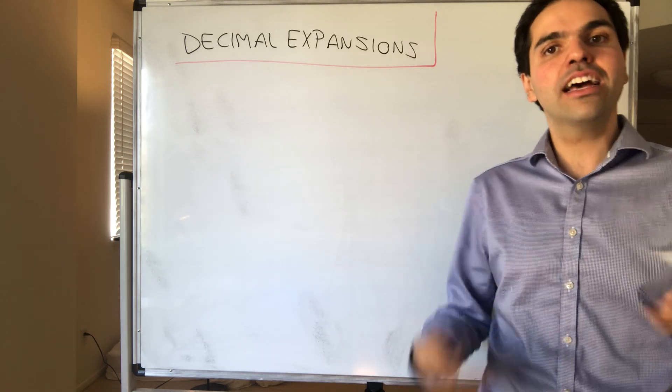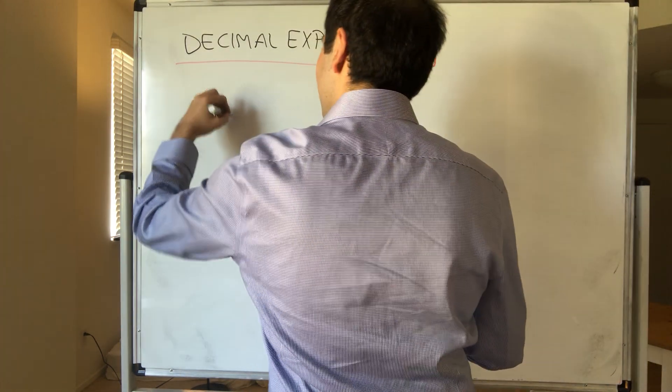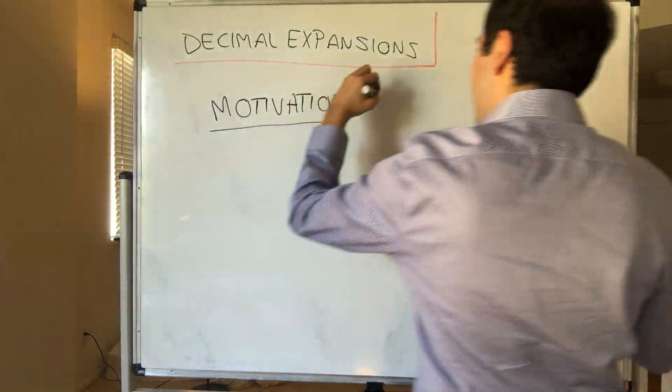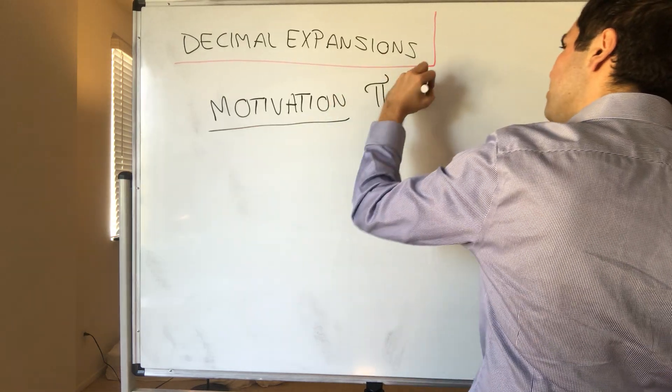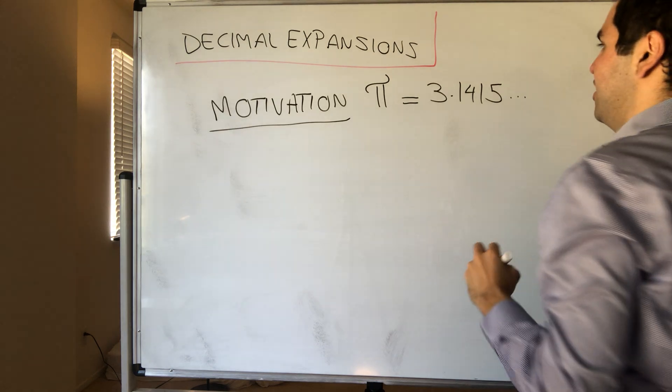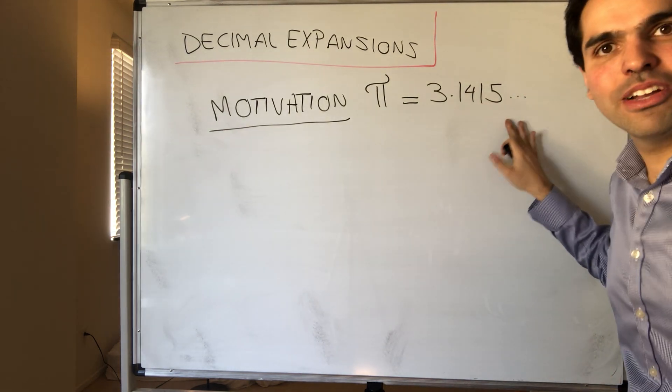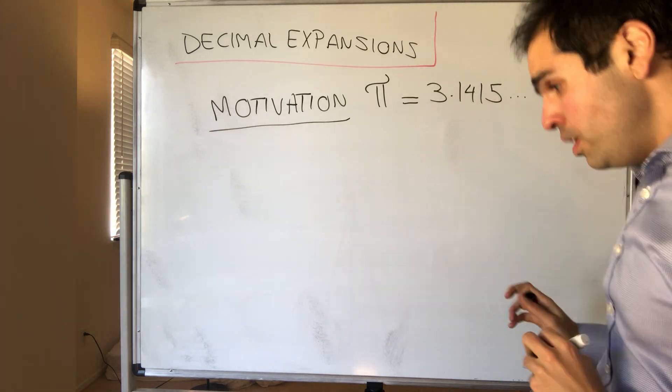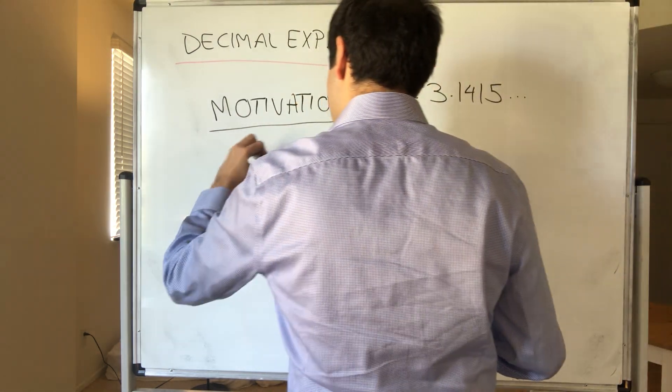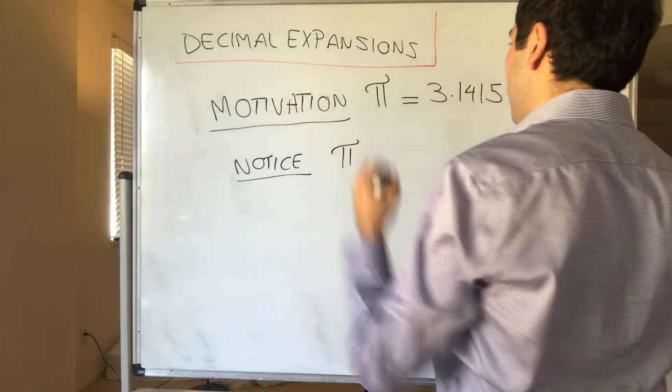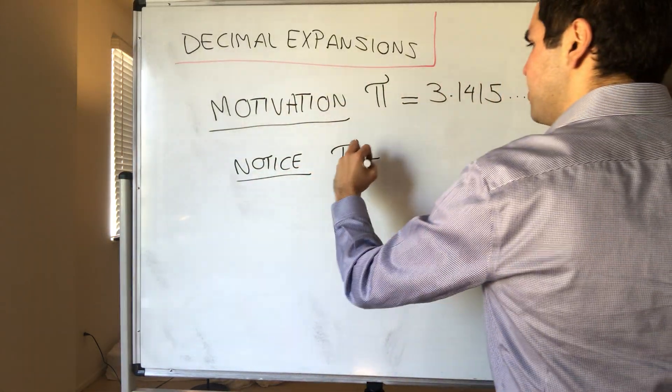And in fact, as a motivation, let me define pi. So what does it mean to say pi is 3.1415 dot dot dot, and I stop here because I don't know more digits of it. And notice the following: pi is 3.1415 et cetera.